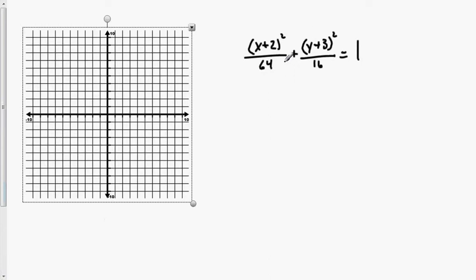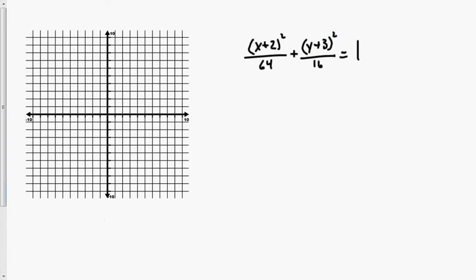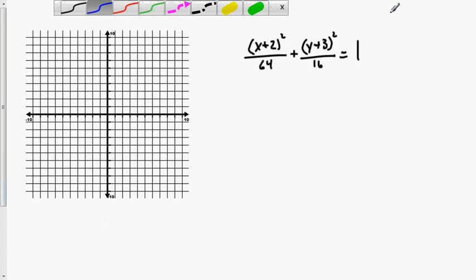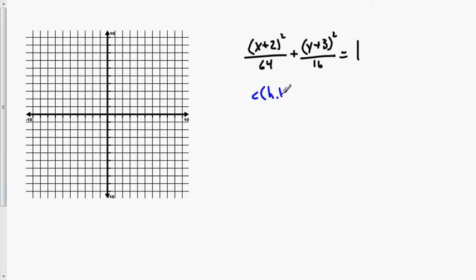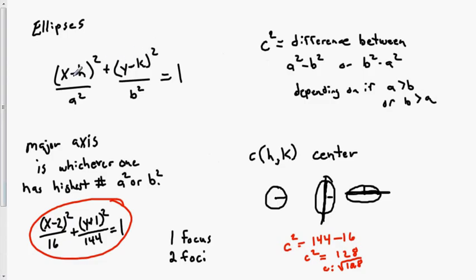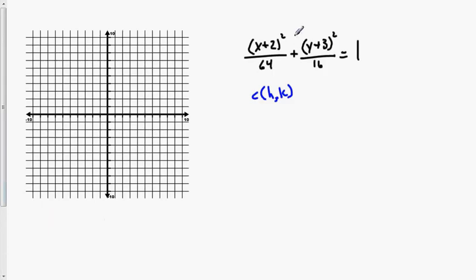Let's work with the equation x plus 2 squared over 64 plus y plus 3 squared over 16 equals 1. The first thing we have to do is find our center (h, k). Remember the standard equation has x minus h and y minus k, which means we need to change the signs. So if this is plus 2, h is negative 2; if this is plus 3, k is negative 3. Our center is at negative 2, negative 3.